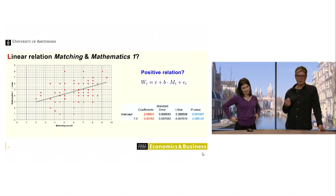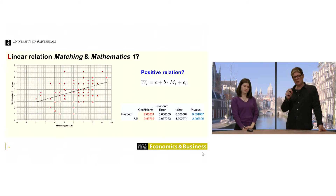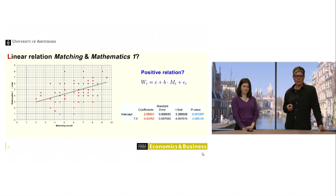In this box plot, each dot is a combination of a matching result and a mathematics result. If you look at the cloud of data points, it goes from the lower-left to the upper-right part — suggesting a positive relationship, though it's not entirely clear.